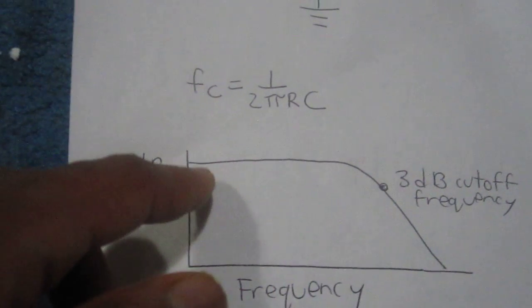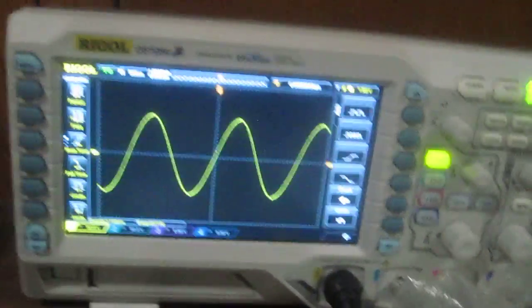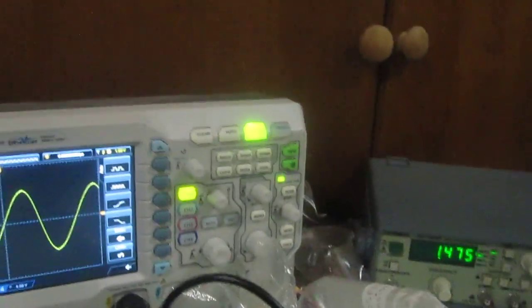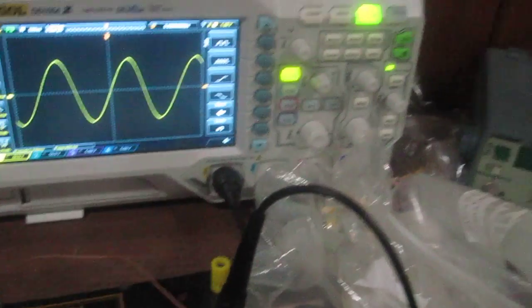So this characteristic curve is representative of low-pass filtering. You'll see this in the oscilloscope. So we're inputting a sine wave signal into the RC low-pass filter circuit.